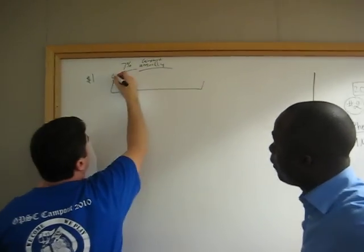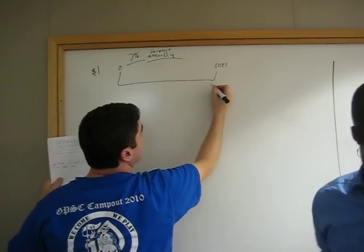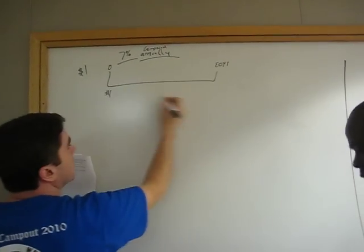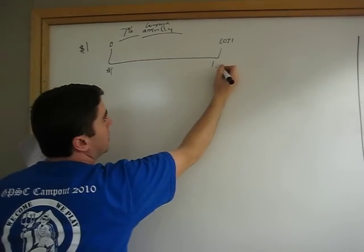When we compound annually, so we start at time zero, and this is end of year one. What do I have at the end of the year? 1.07. Right, 1.07.